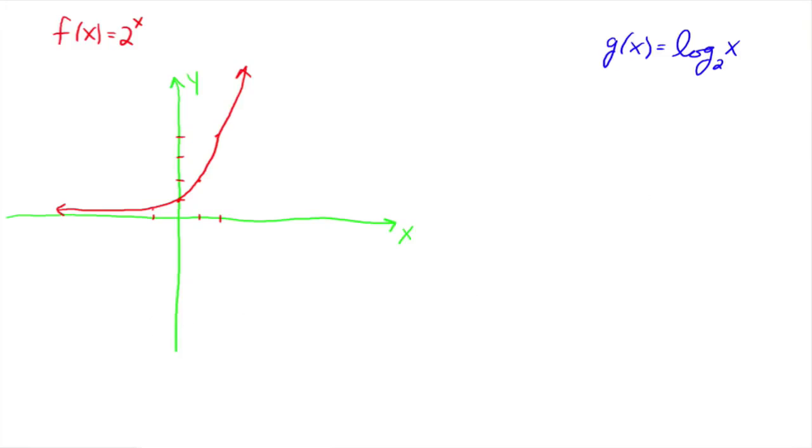Alright, so now let's graph. There's a couple ways to do it. I'm going to encourage you to rewrite this logarithmic function in exponential form. So think of the g of x as a y, y equals log base two of x and then rewrite it as two to the y is equal to x. Then when you do your t-chart, we can say, alright, this is x, this is y.